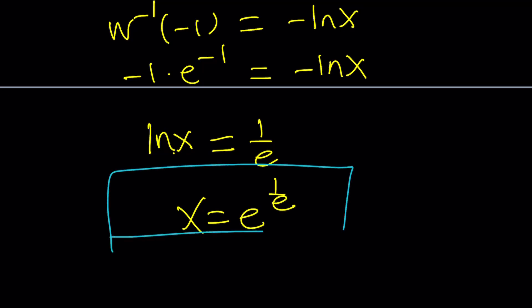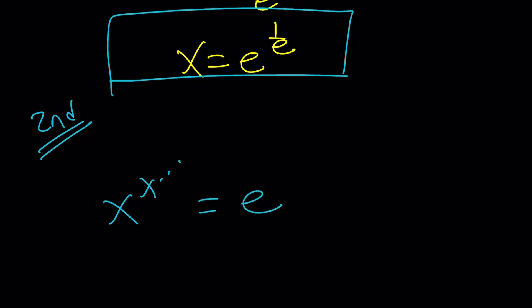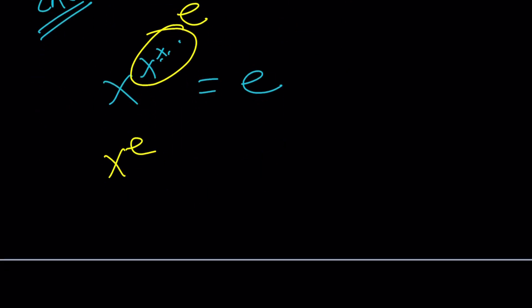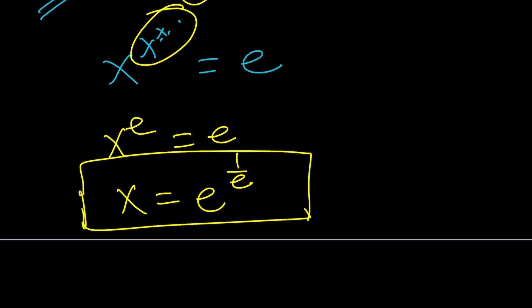That was a very long method, and some people will say — why are you beating around the bush? Let's get to the point. Here's the shortcut: when the whole infinite tower equals e, notice that the exponent is also e. So we get x to the e equals e, then raise both sides to the power of 1 over e, and that gives you x equals e to the power of 1 over e — which is the answer.